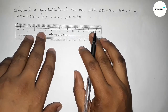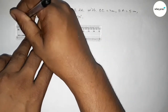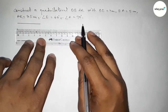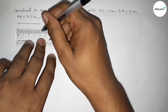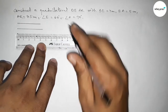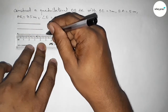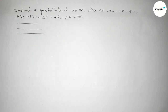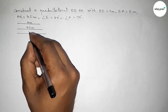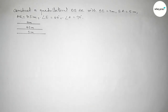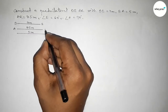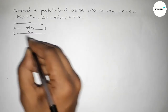First of all, we have to draw the given sides. Drawing a line of length 4 centimeter, then drawing another line of length 4.5 centimeter, and last drawing a line of length 5 centimeter. So this side is 4 centimeter, this side is 4.5 centimeter, and this side is 5 centimeter. This is DE, this side AR, and this side EA.